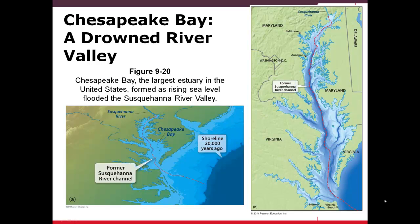An example of an estuary formed from rising sea levels is the Chesapeake Bay. The Chesapeake Bay, 20,000 years ago, was just a river. But as the glaciers melted and the water ran into the oceans, which raised the sea levels, much of this river valley — specifically the Susquehanna River Valley — was flooded. This is now called the Chesapeake Bay, which is between Maryland and Virginia, near Washington D.C.